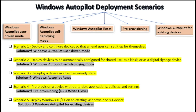Now let's check the different types of deployment scenarios and what options we can use in each. The very first scenario is when we want to deploy and configure a device so that the end user can set it up by themselves. In this scenario we can use Windows Autopilot user-driven mode, where the user can perform the Autopilot on their own.